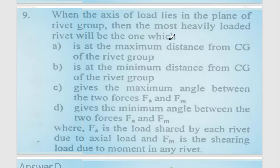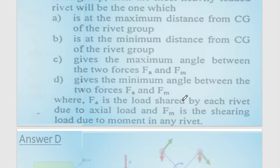When the axis of the load lies in the plane of the rivet group, the most heavily loaded rivet is the one which gives the minimum angle between the two forces.